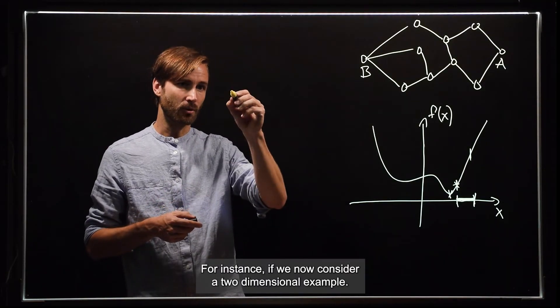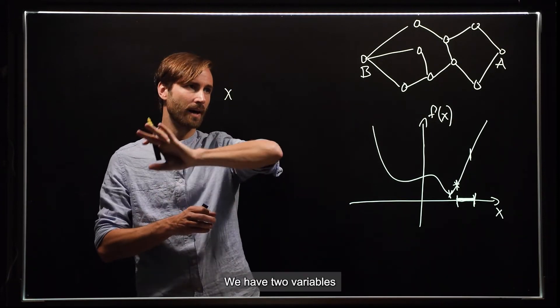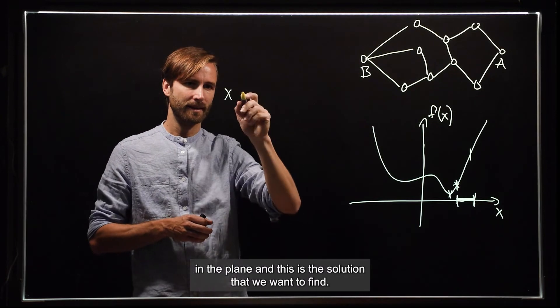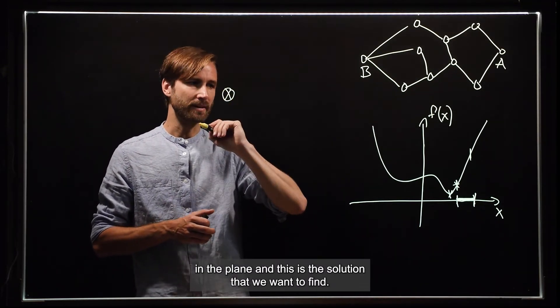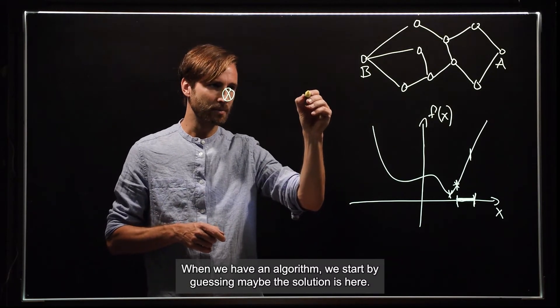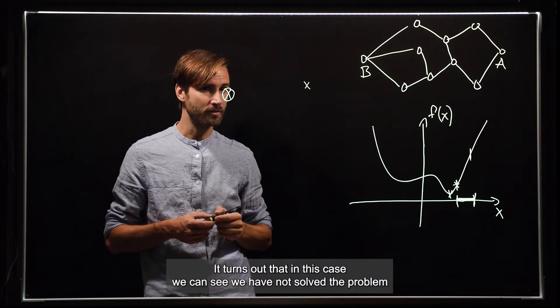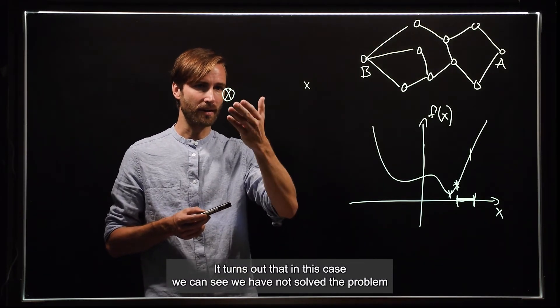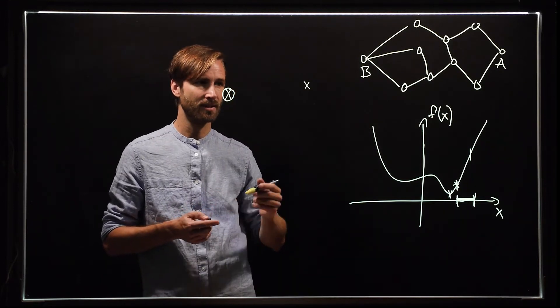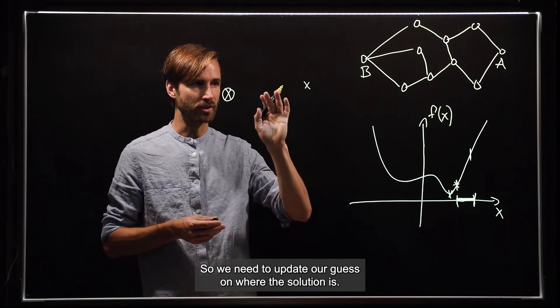So for instance, if we now consider a two-dimensional example. So we have two variables in the plane and this is the solution that we want to find. So when we have an algorithm, we start by guessing maybe that the solution is here. It turns out that in this case, we can see we have not solved the problem because the guess and the actual solution are not at the same place. So we need to update our guess on where the solution is.